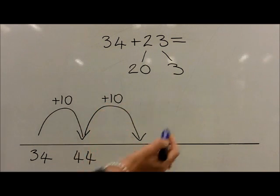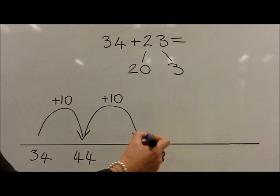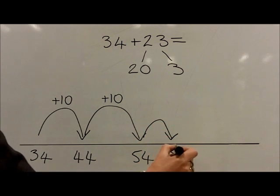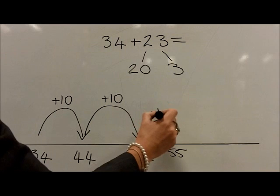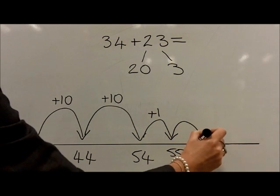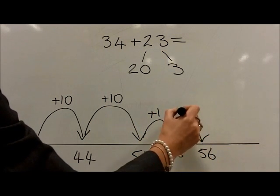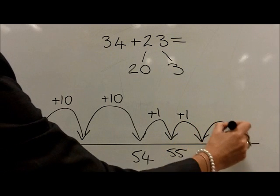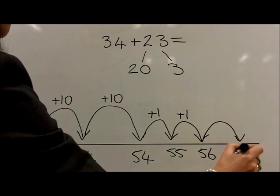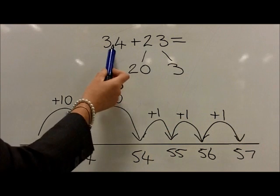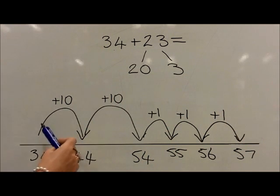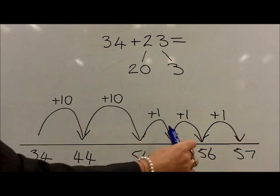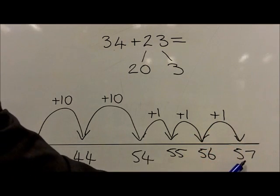Then add on three ones to reach 55, and 56, and finally 57. So the question, 34 plus 23 makes 57.